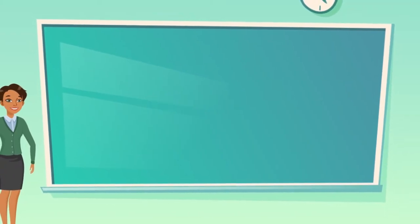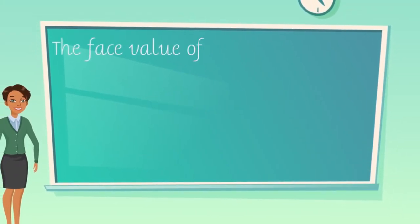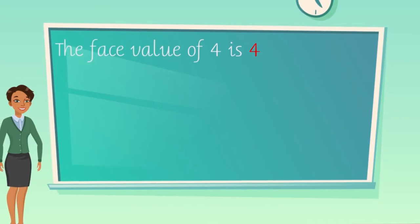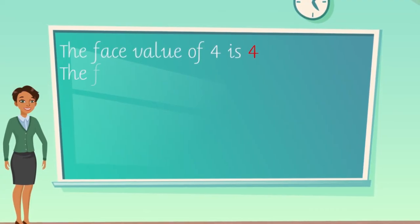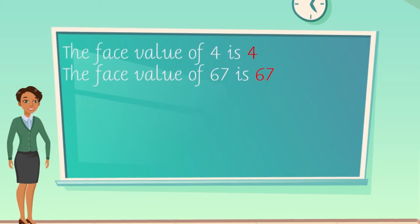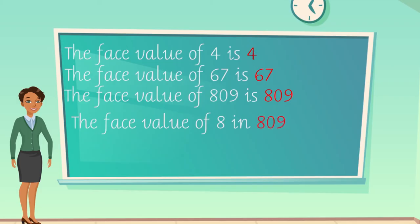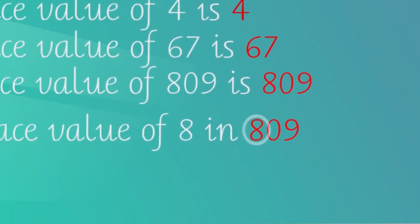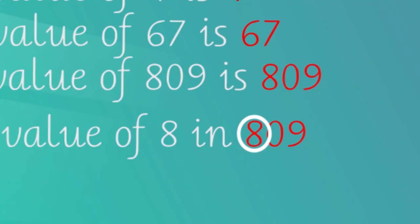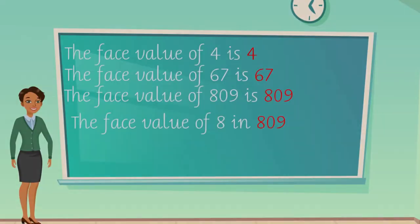For example, the face value of 4 is 4. The face value of 67 will be 67. Face value of 809 will be 809. If I ask what is the face value of 8 in 809 - I want the face value of 8 in 809 - then my answer will be 8 only. The value doesn't change.